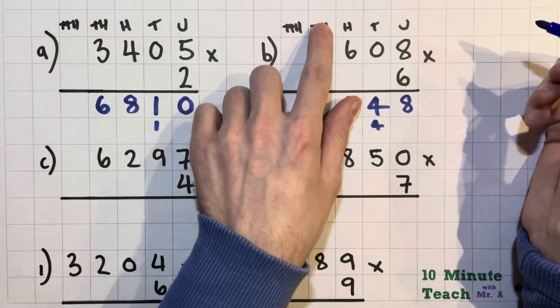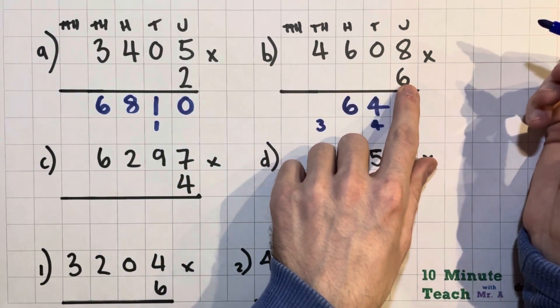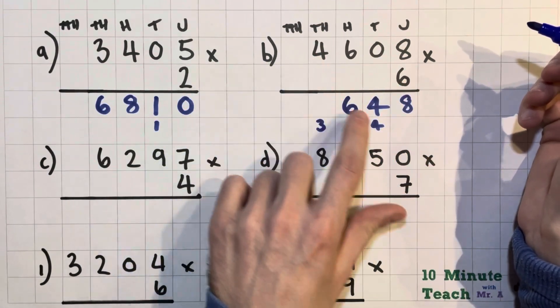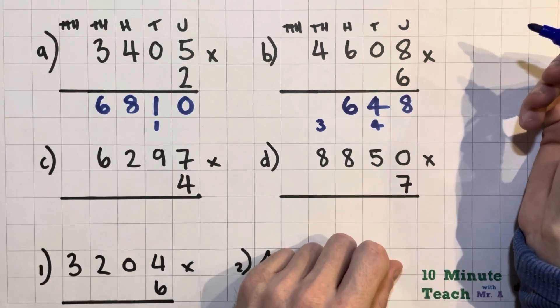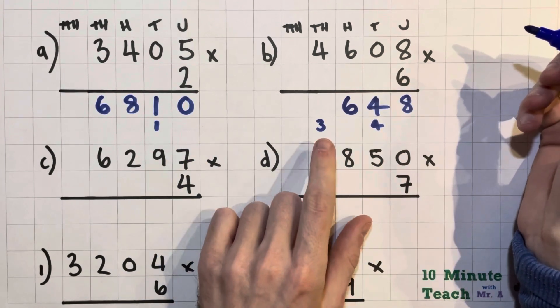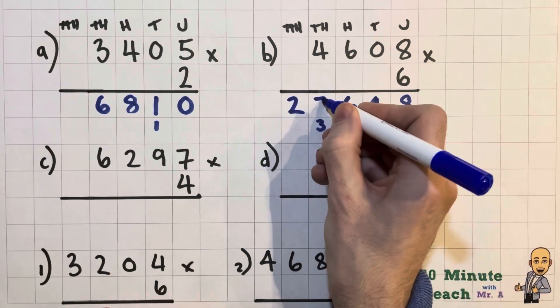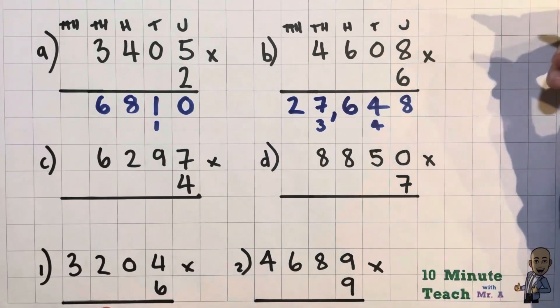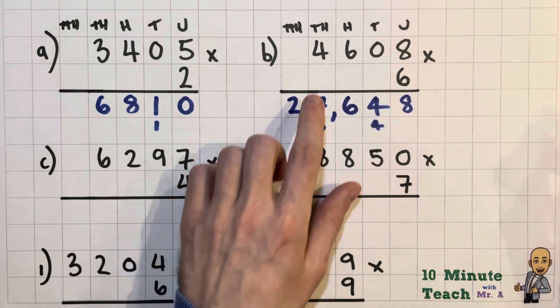So now I've got 4000 multiplied by 6. So 4 times 6 is 24, that would be 24,000. I've got 3000 to add on there, so 27,000. So getting to quite large numbers there.